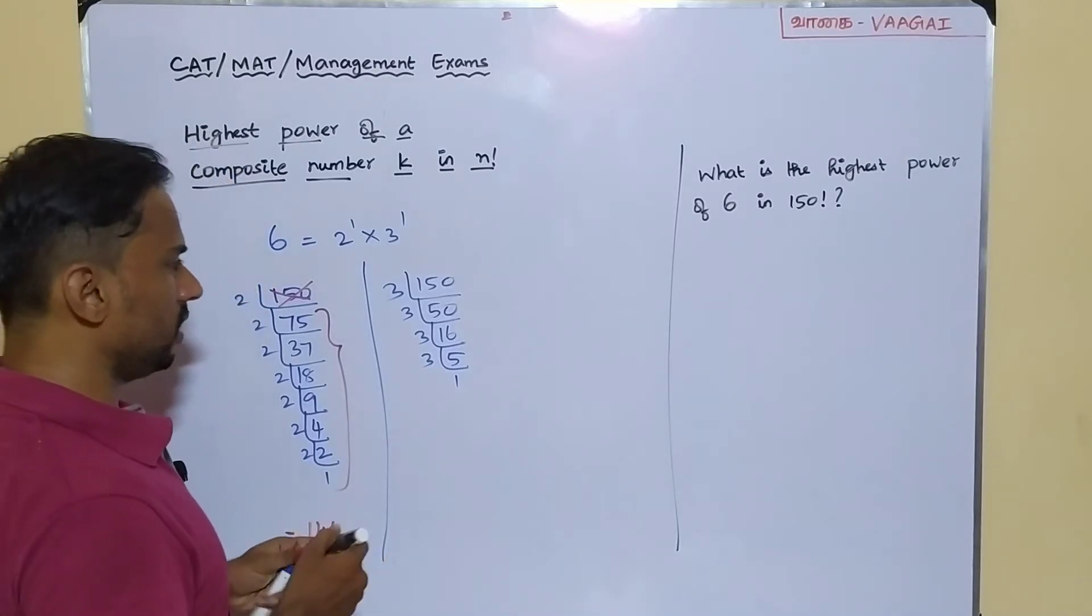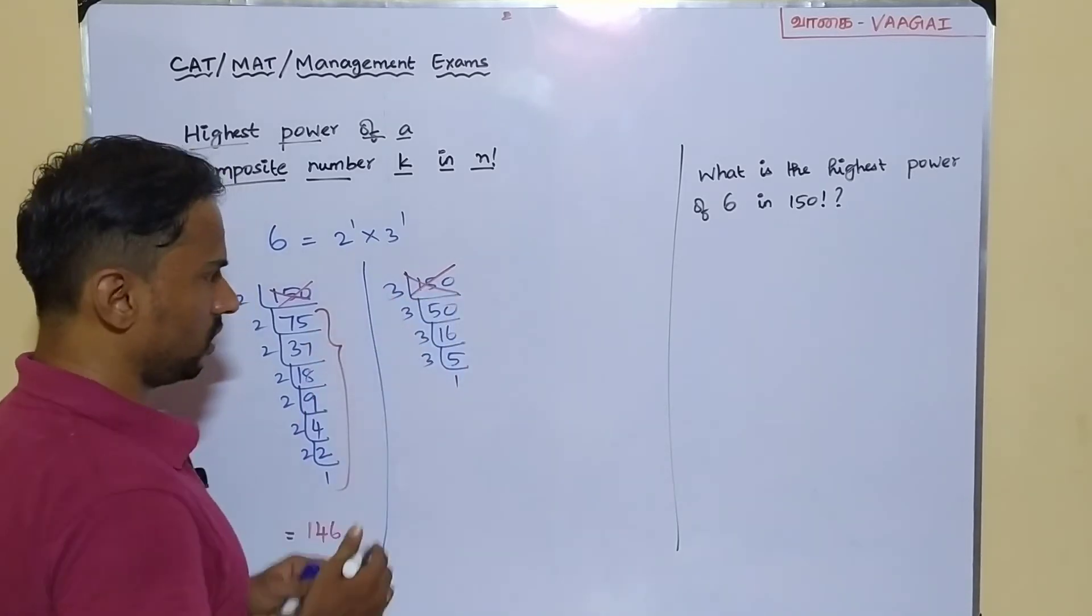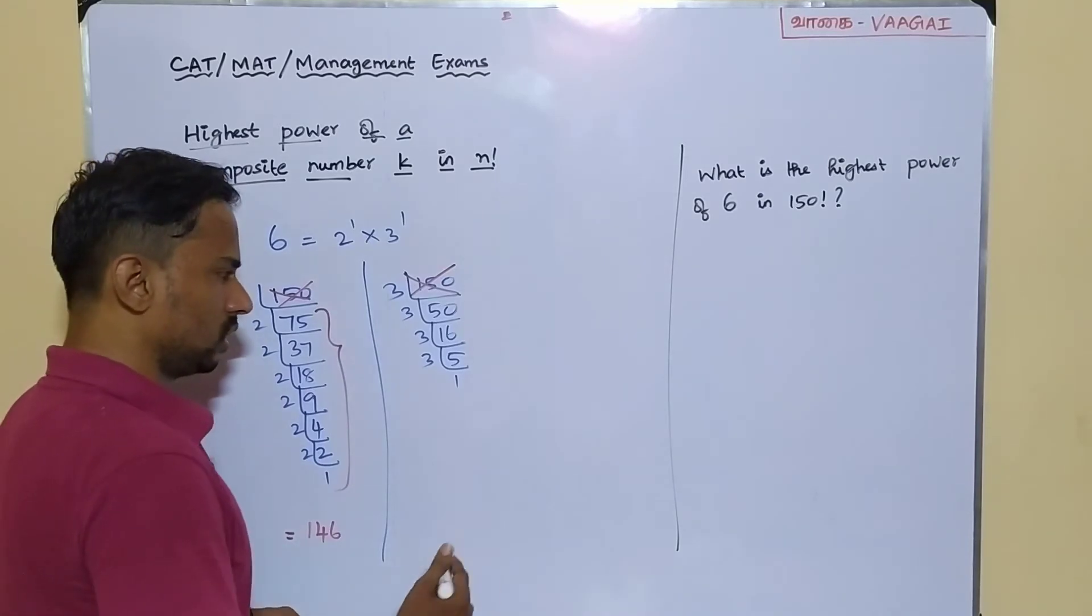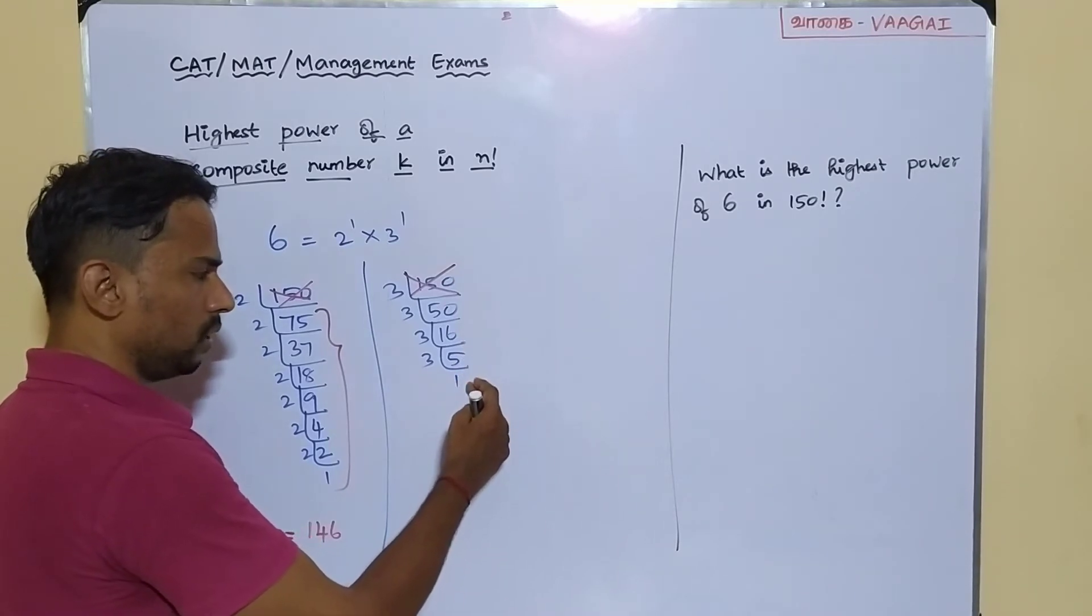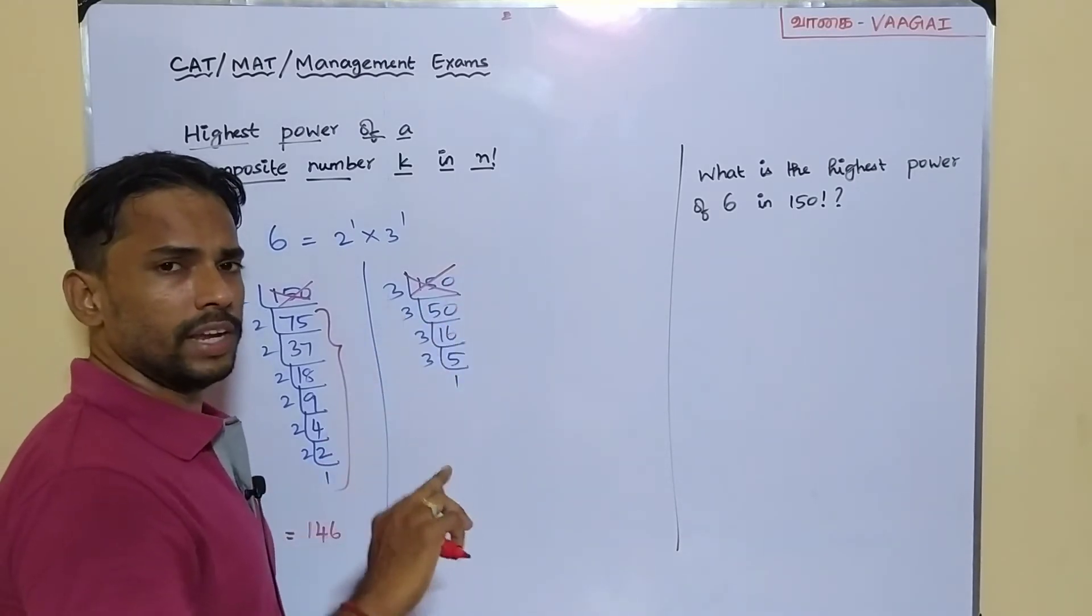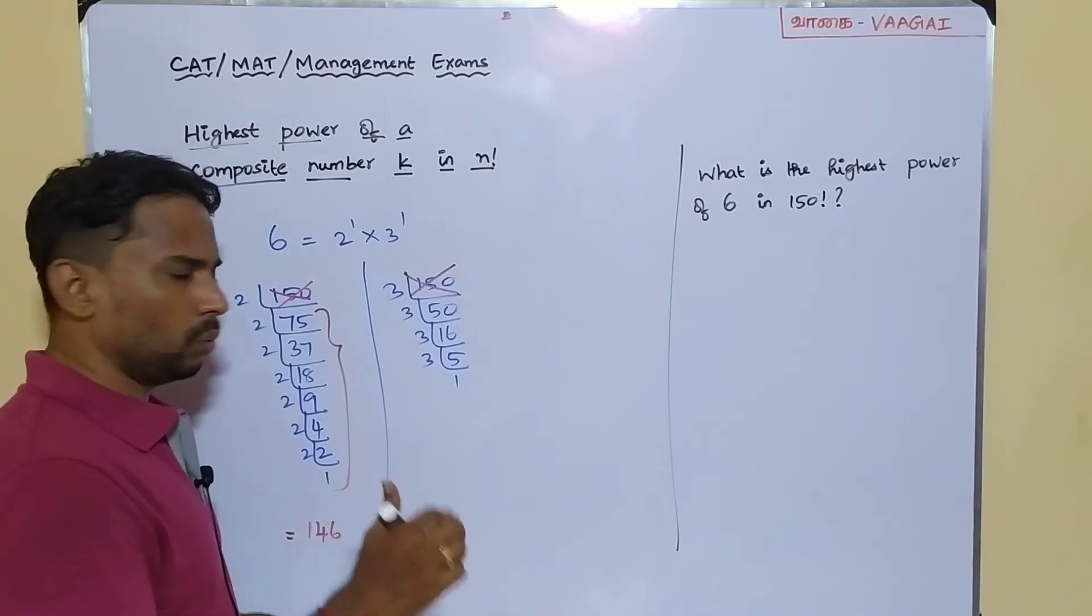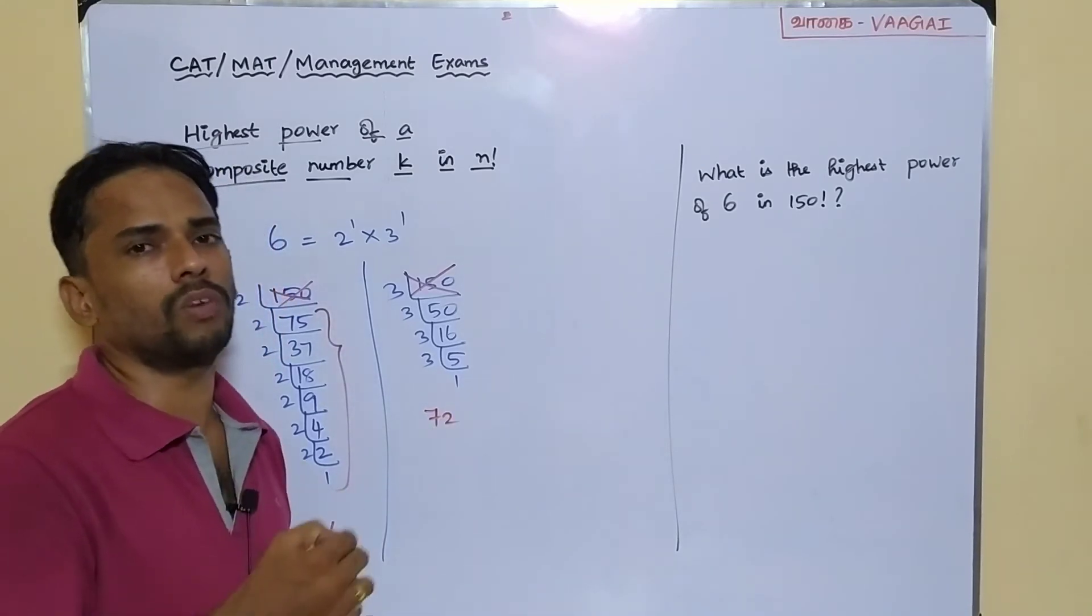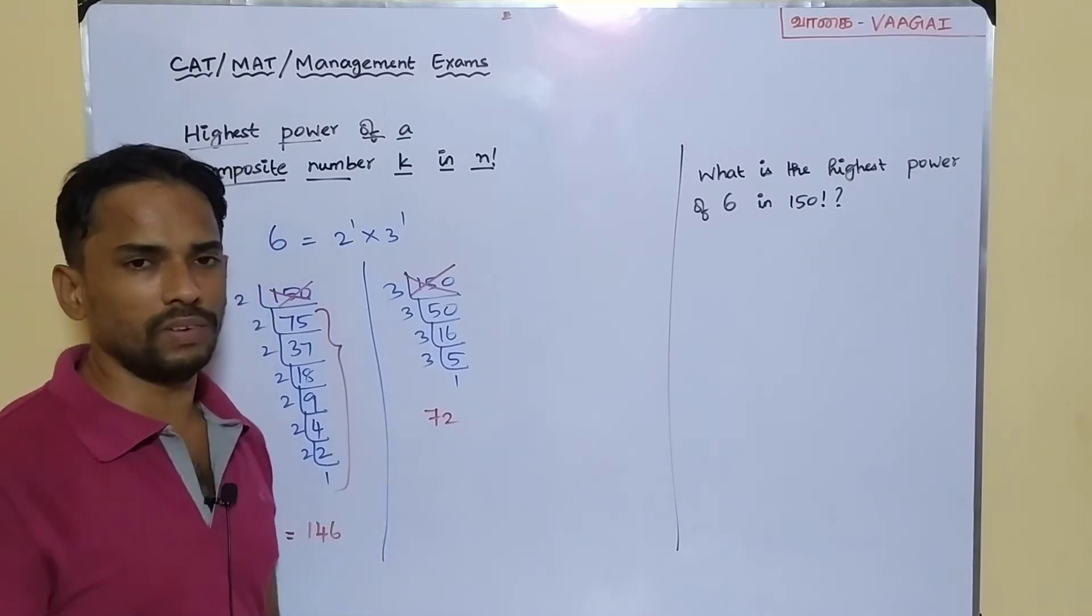Same way, I can just eliminate my first number 150 from where I started, and I can add all the remaining numbers. This will give me 16 plus 5 plus 1 will be 22, and 22 plus this 50 will give you 72. So the highest power of 3 available in 150 factorial will be equal to this 72.